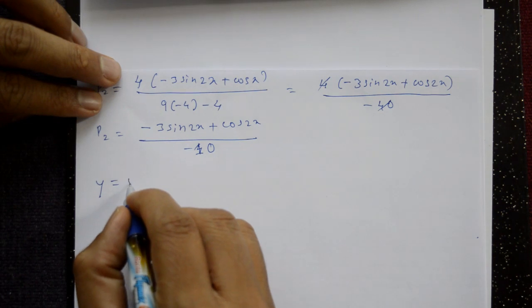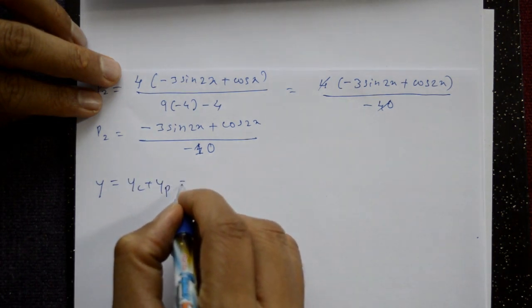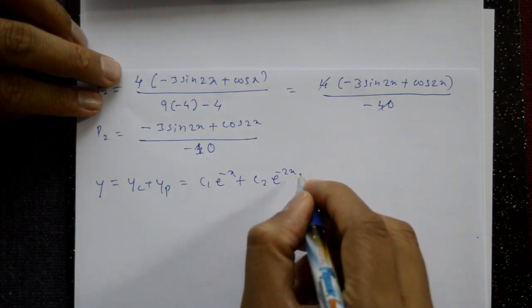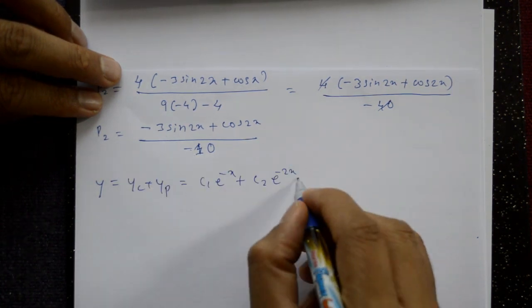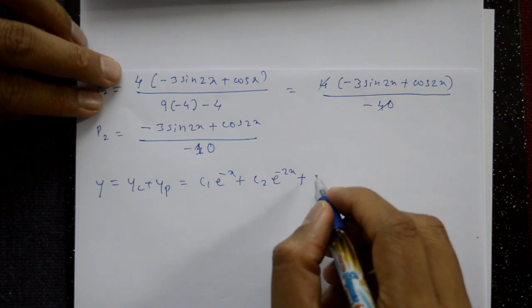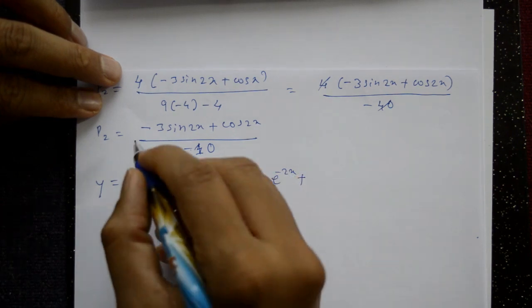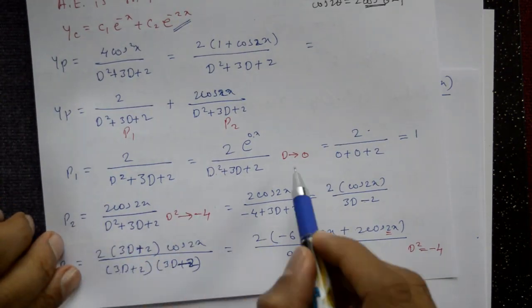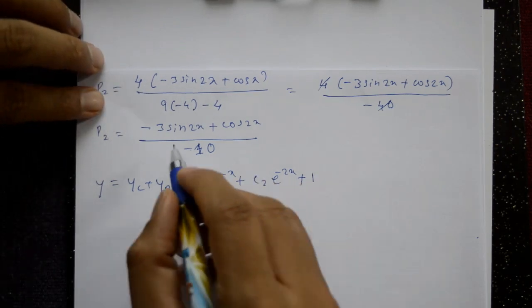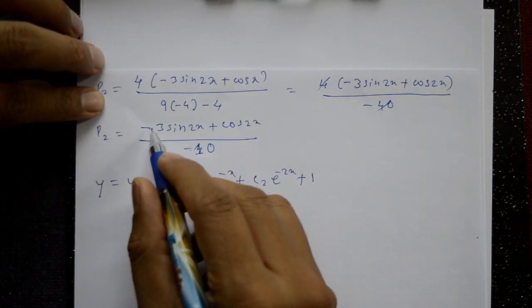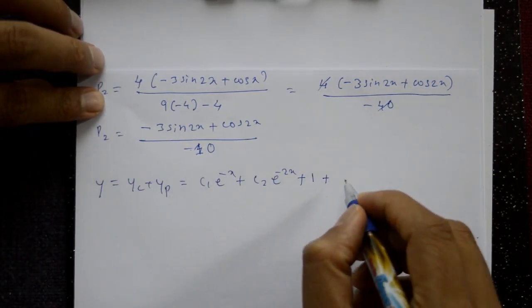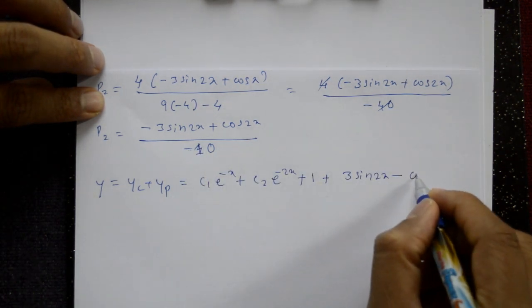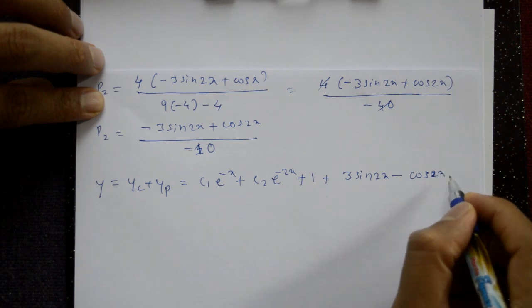The complete solution is y = yc + yp. The complementary function yc = C1·e^(-x) + C2·e^(-2x). The particular integral yp = P1 + P2 = 1 + (3sin2x - cos2x)/10.